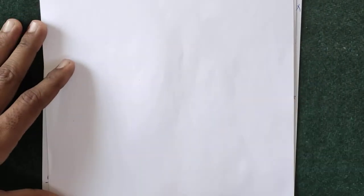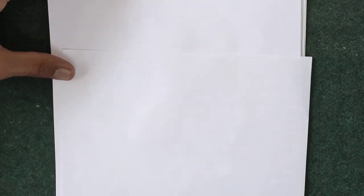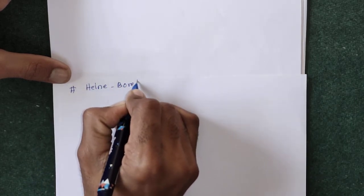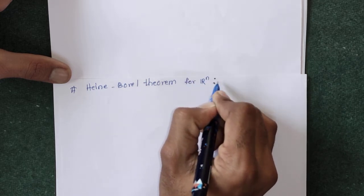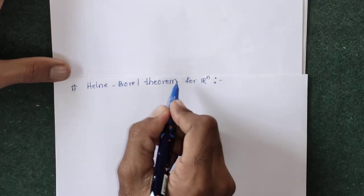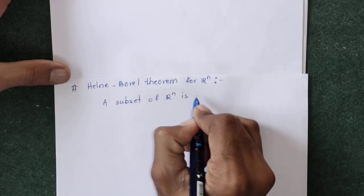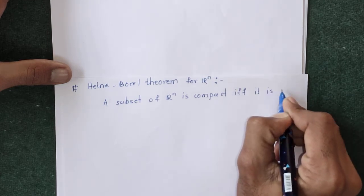We will now see some examples on compact sets. Before that, we take one theorem: the Heine-Borel theorem for R^n. A subset of R^n is compact if and only if it is closed and bounded.